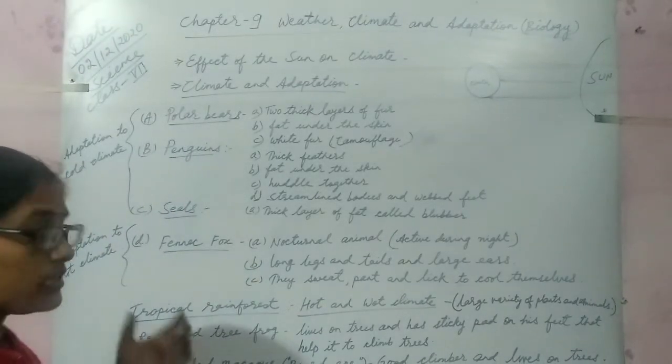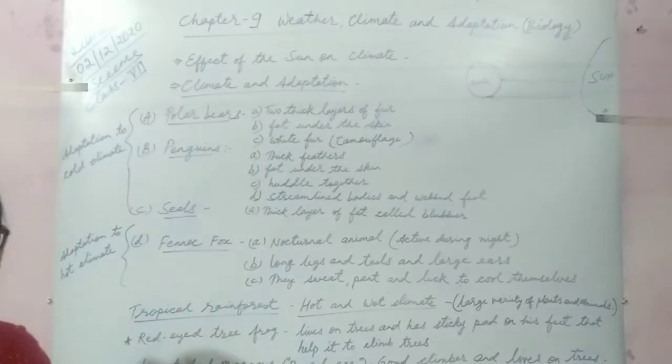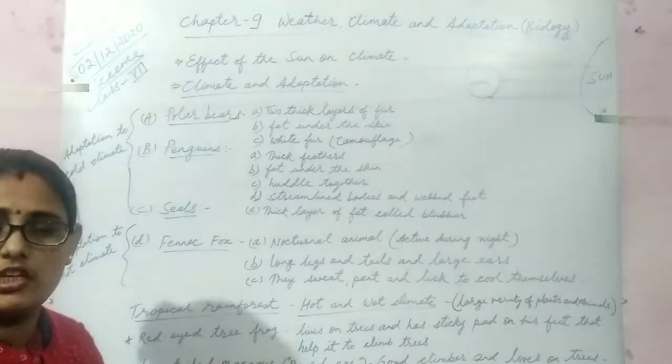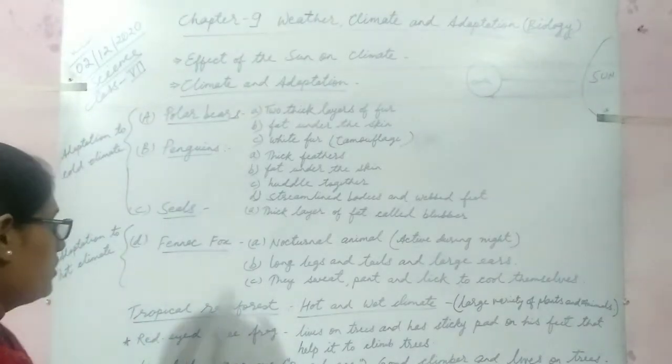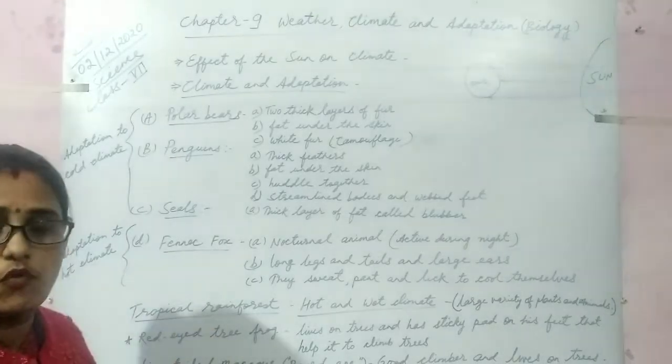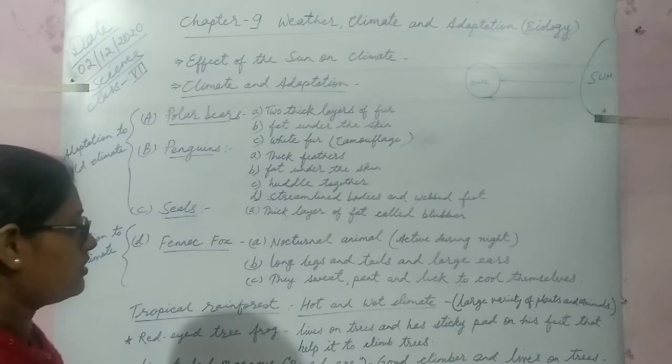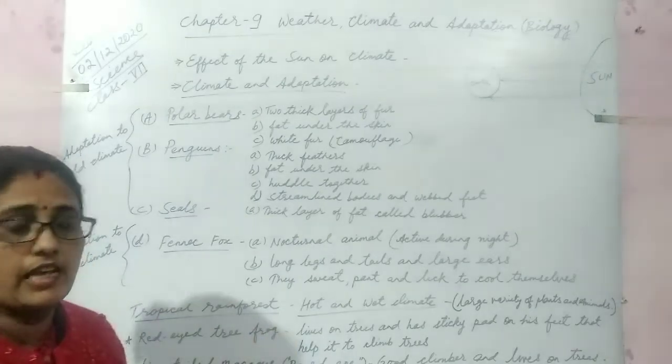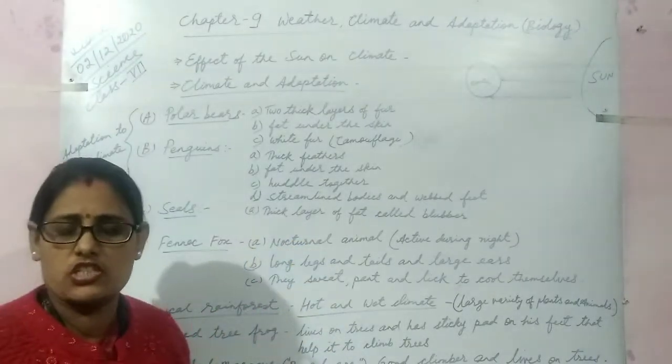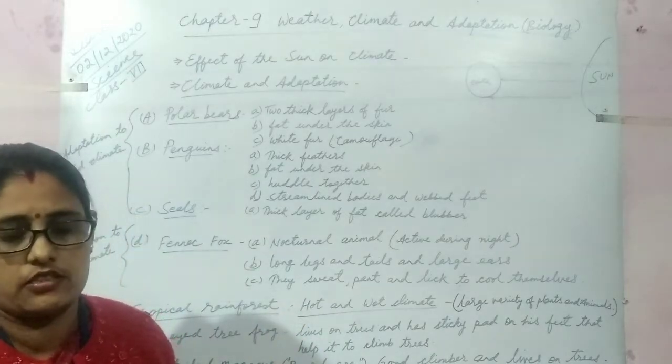Now let's discuss about the animals which are commonly found in desert areas. First is fennec fox. You might have seen fennec fox. It has large ears. This is known as nocturnal animal, animals which are very active during the night time.